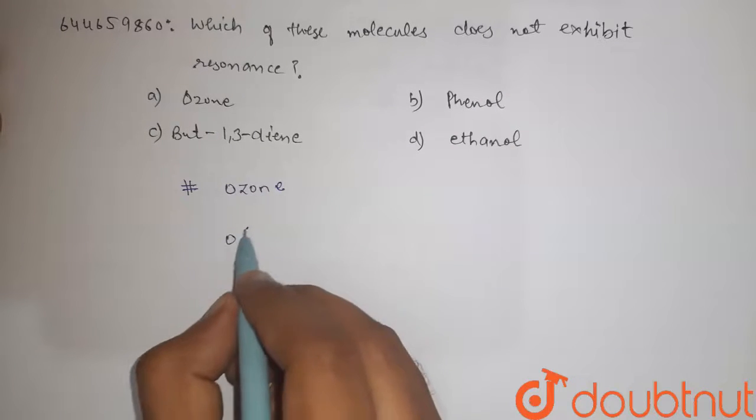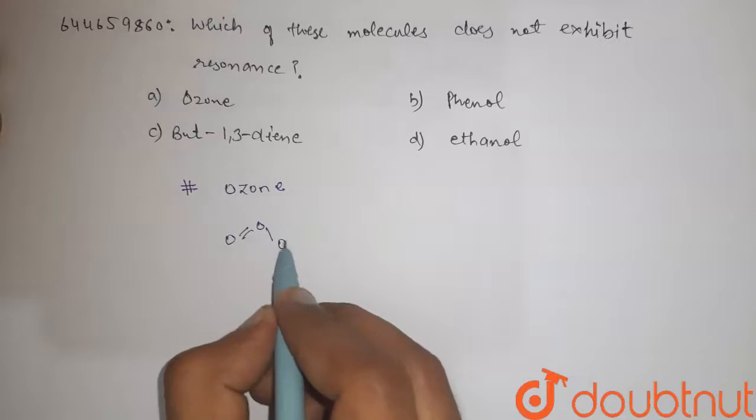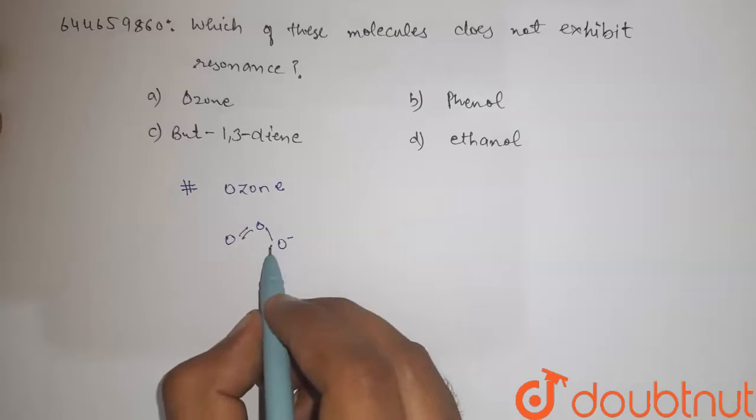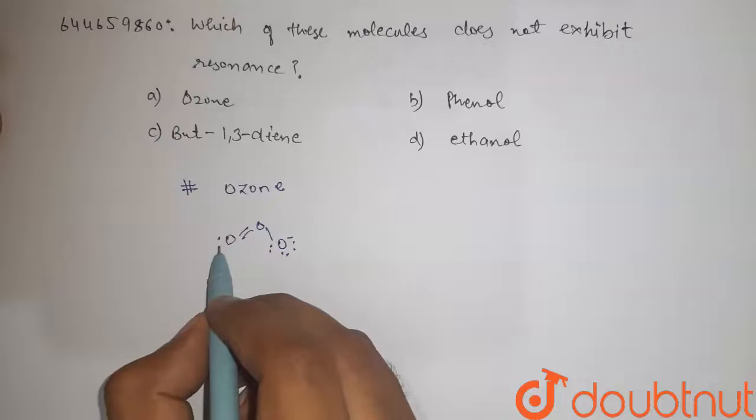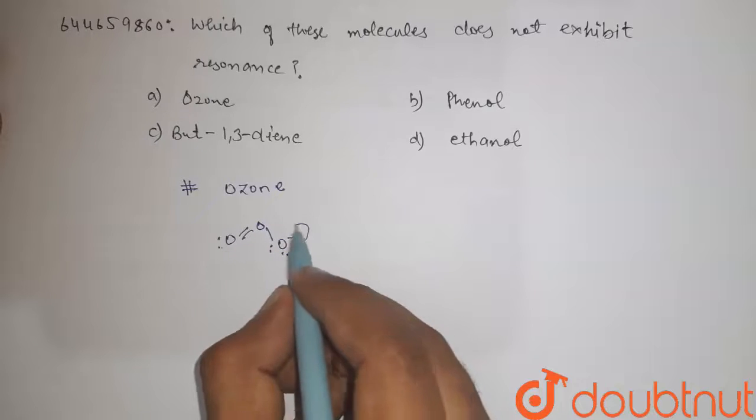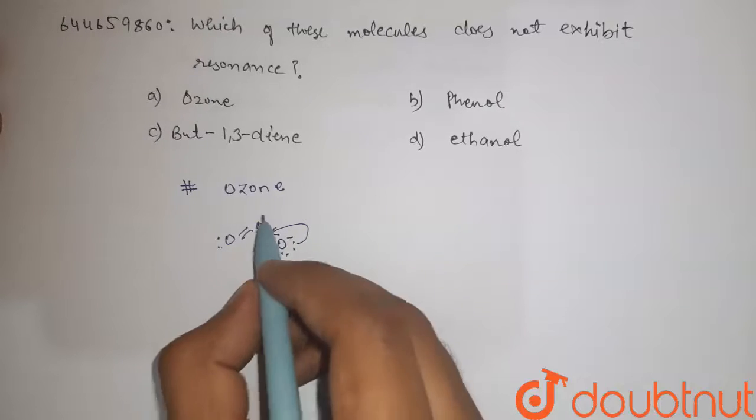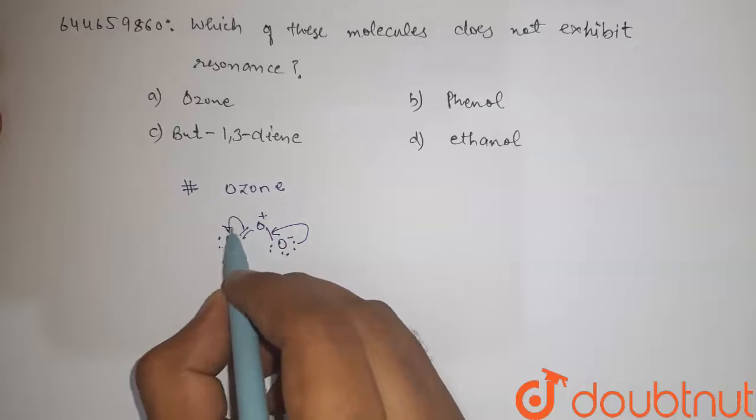That is O double bond O single bond O negative. Here are three lone pairs, there is one lone pair. We know that these lone pairs attack here, it will become positive, and this double bond attacks here.